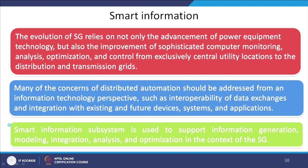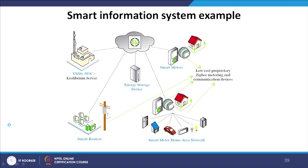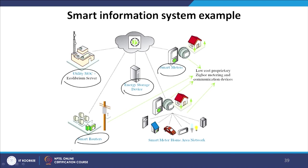The smart information subsystem is used to support information generation, modeling, integration, analysis, and optimization in the context of the smart grid. In a smart information system, the utility has energy storage devices in place, along with smart meters and smart routers. The smart meter home area network uses low-cost Zigbee metering communication devices for the exchange of information within the smart grid.